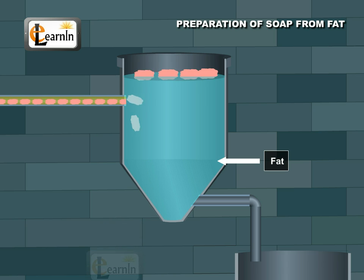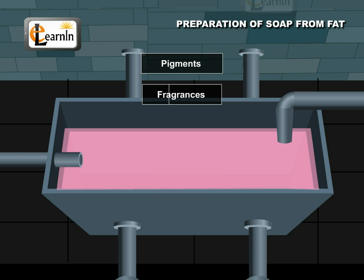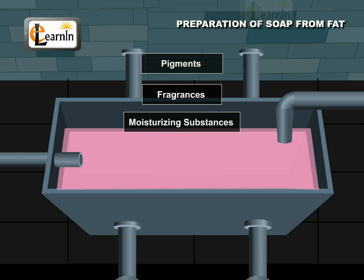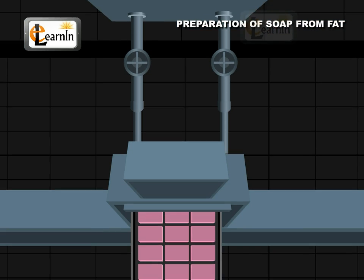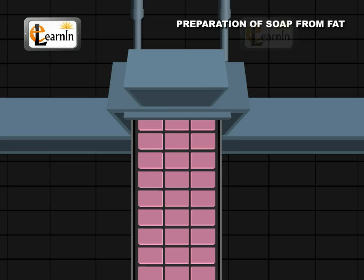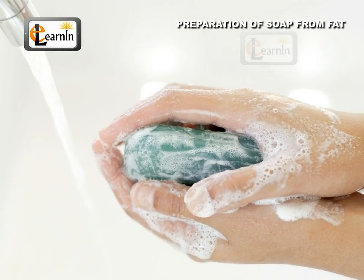The soap is separated off, then remelted, and various ingredients are added, such as pigments, fragrances, and moisturizing substances. This process gives you the type of soap commonly used for washing your hands.